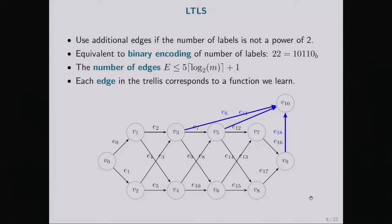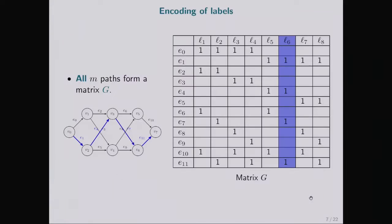The number of labels can be upper-bounded with the formula you can see. The number of edges is the thing that really matters since each edge corresponds to a function we learn. The number of edges influences the size of our model.